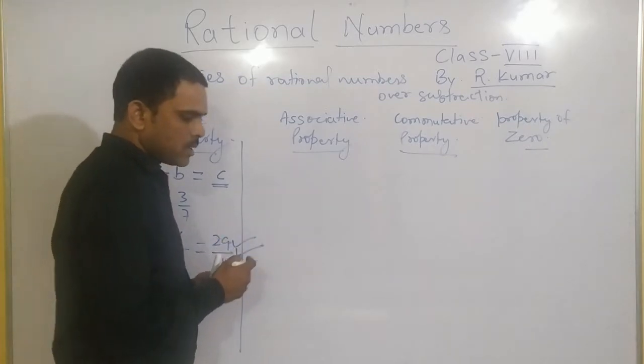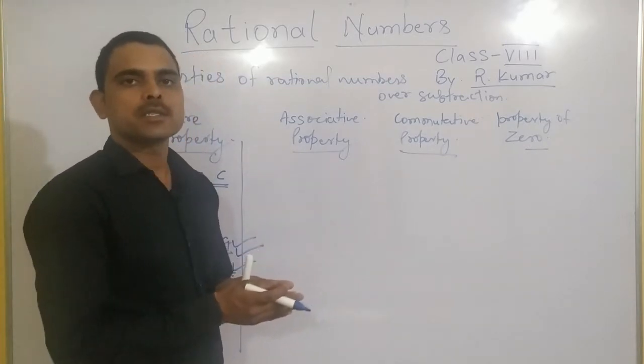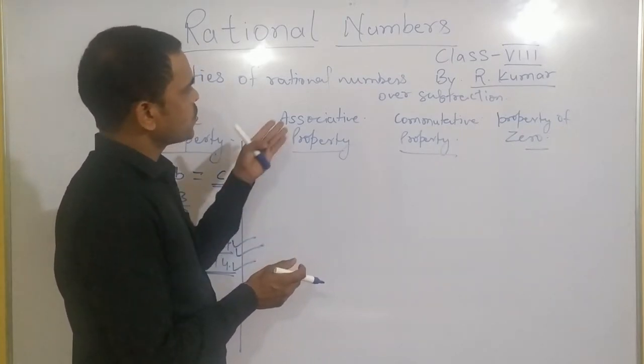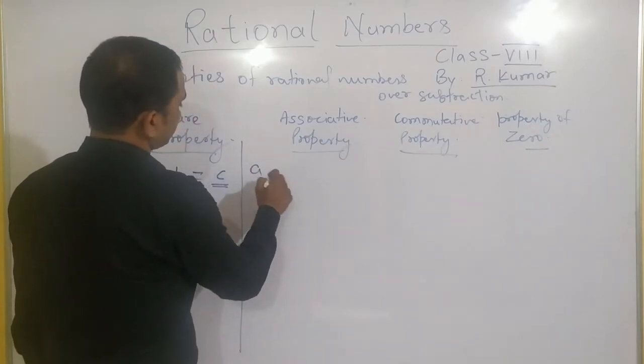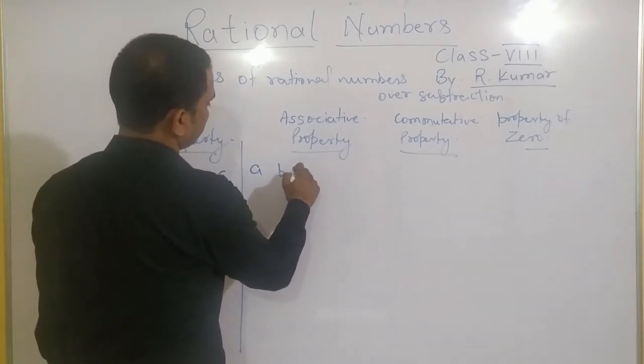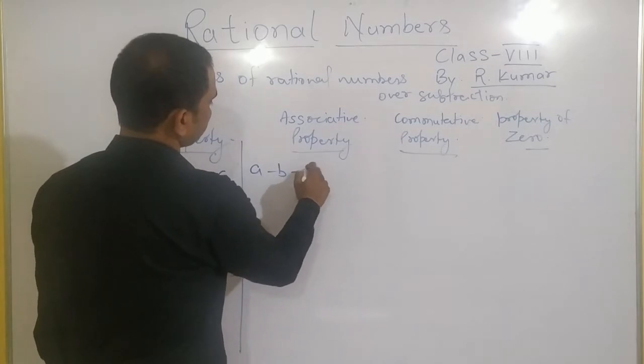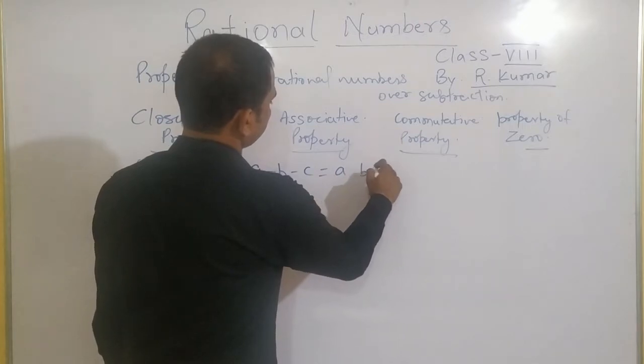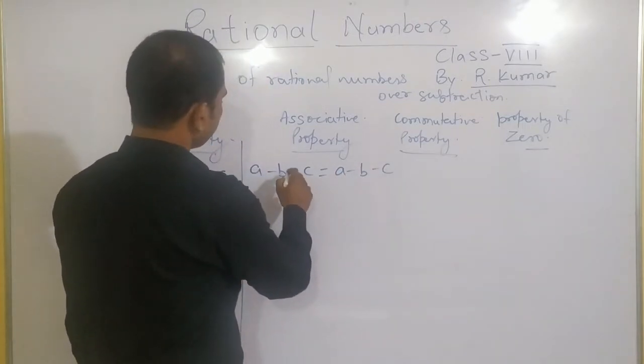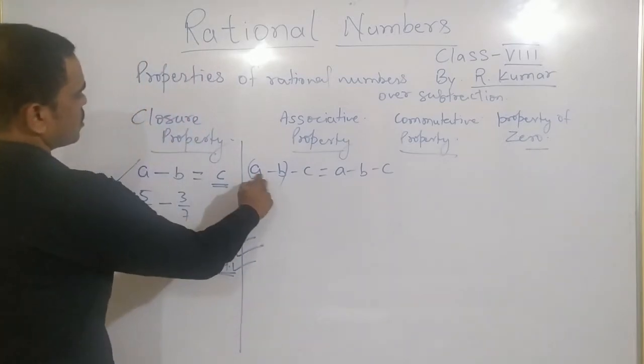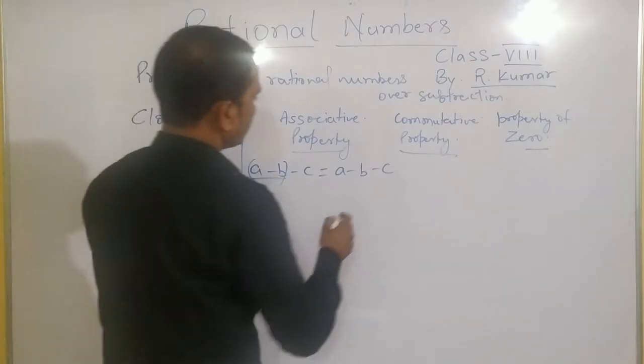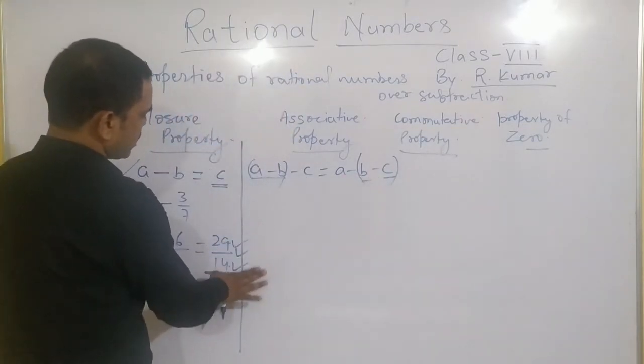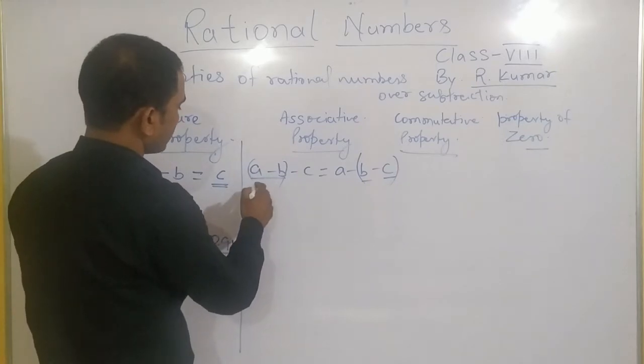We will check whether we are getting the same integer after changing the order or not with subtraction. A, B and C. I will change the order here. First of all, I am subtracting B from A. On this side, I am subtracting C from A. I will take, as an example, few rational numbers.